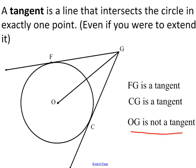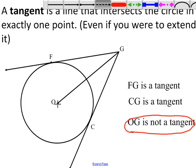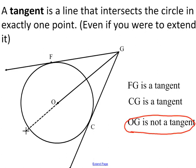OG is not a tangent. The reason it's not a tangent is because if you were to extend line OG, it would intersect the circle at two points, therefore it's not a tangent. You're supposed to be able to extend it and it only touches the circle at one point. So those are some basic definitions of a chord, a secant, and a tangent.